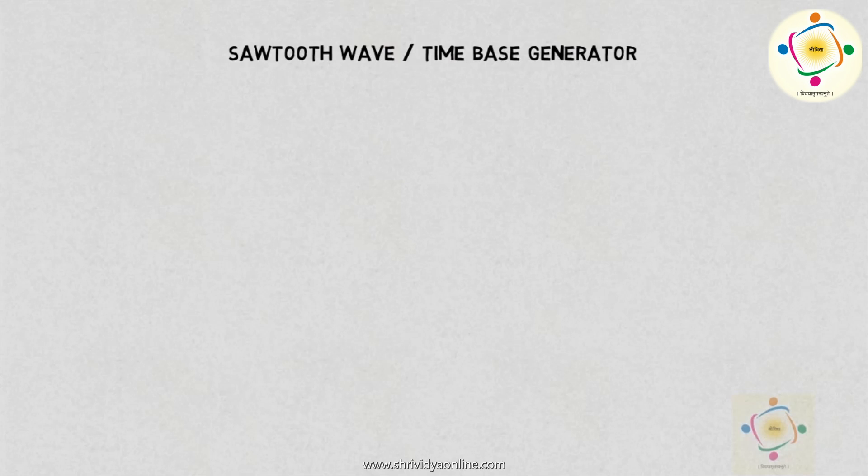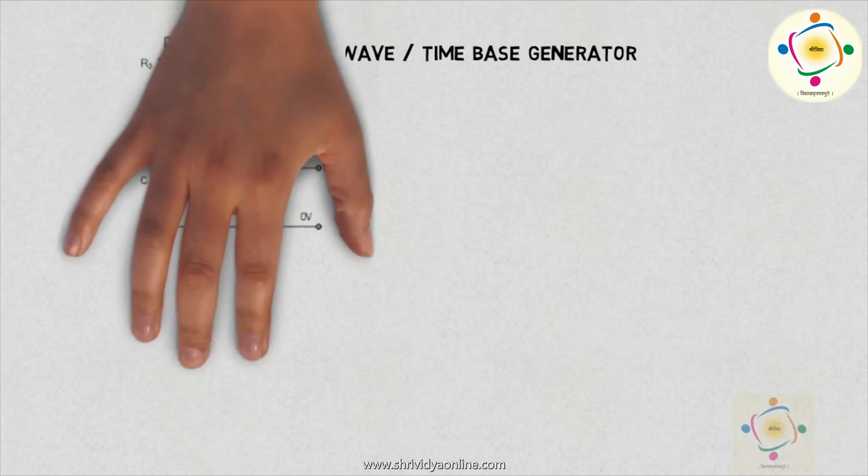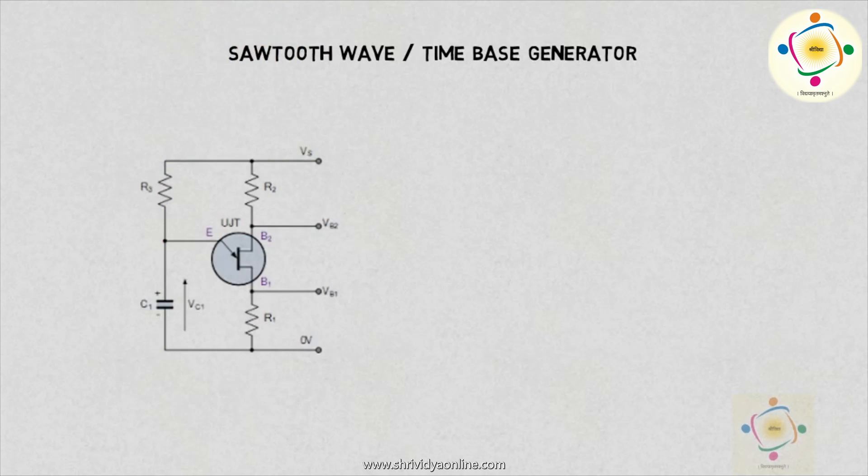This is essential for the horizontal movement of the beam. Now we will see how this can be done. For this we need one circuit which is known as time-based generator. It uses UJT, i.e., unijunction transistor.